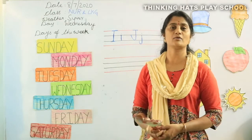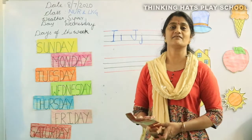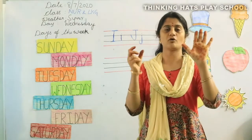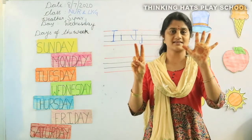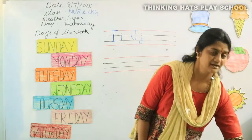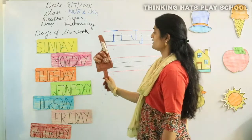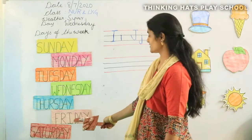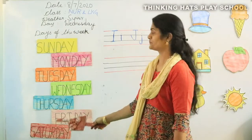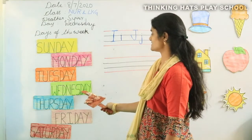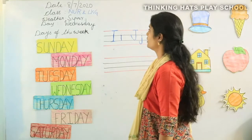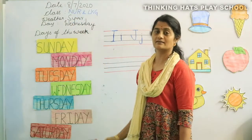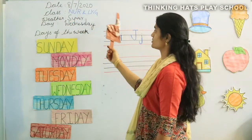How many days are there in a week? There are seven days in a week. You can show with your fingers like how we used to do every time. Show with your fingers — there are seven days in a week. Sunday, Monday, Tuesday, Wednesday, Thursday, Friday and Saturday. Today is Wednesday, and the date is 8th July 2020.